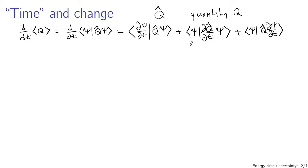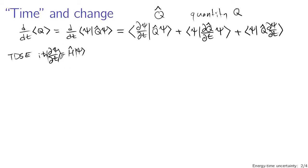Keeping things in this general form for conciseness, we can simplify the terms with partial derivatives of psi using the time-dependent Schrödinger equation: iħ (∂ψ/∂t) = H-hat acting on psi. So partial psi partial t can be replaced by (1/iħ) H-hat psi. Substituting in for these terms, the three expectation-value-like terms can be simplified. The first term becomes (1/iħ) with H-hat applied to psi on the left, and Q-hat psi on the right.